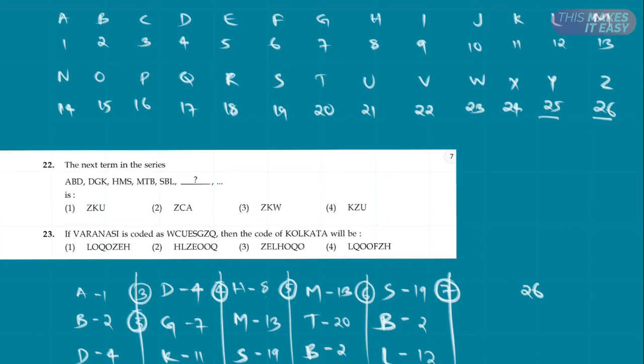In the same way, 2 plus 5 is 7, 7 plus 6 is 13, 13 plus 7 is 20. 20 plus 8 is basically 28. There are only 26 letters, so after 26 we will add 2. So here we will get 2. 2 plus 9 is 11.